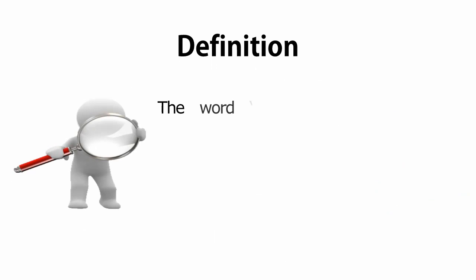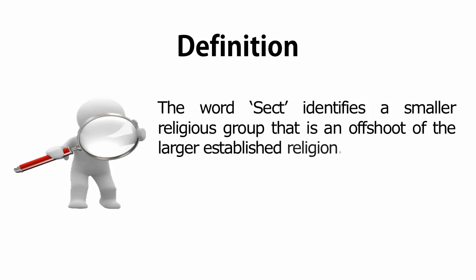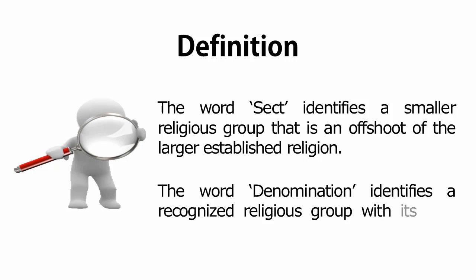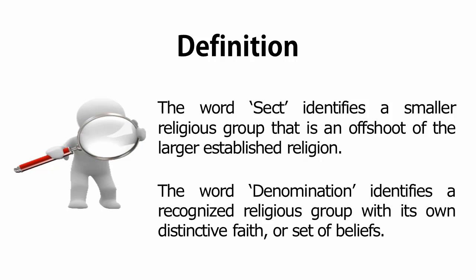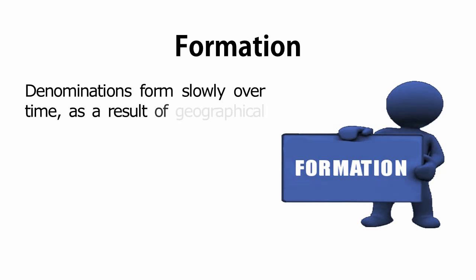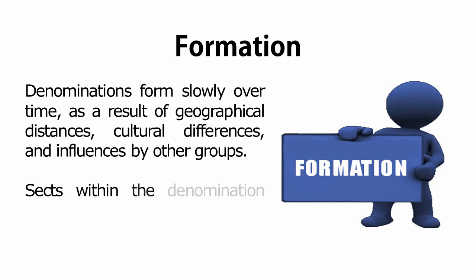The word sect identifies a smaller religious group that is an offshoot of the larger established religion. The word denomination identifies a recognized religious group with its own distinctive faith or set of beliefs. Denominations form slowly over time, as a result of geographical distances, cultural differences, and influences by other groups.